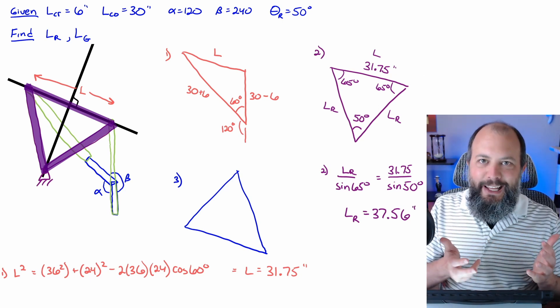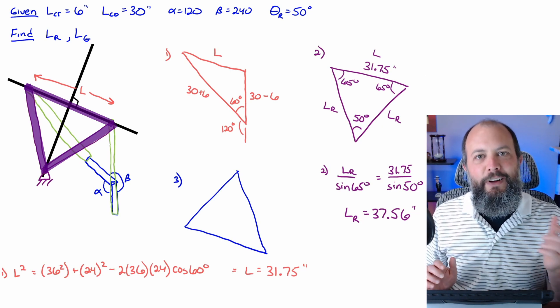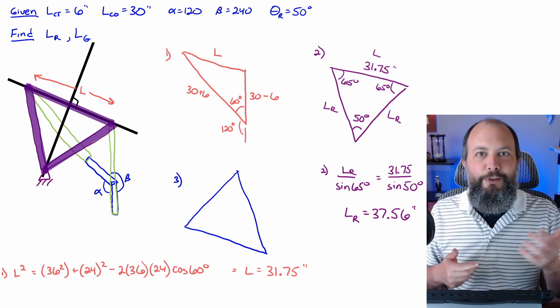A law of sines on this triangle gives you now the length of the rocker, which was one of the two values you needed to find. So 37.56 inches is one of your final answers.